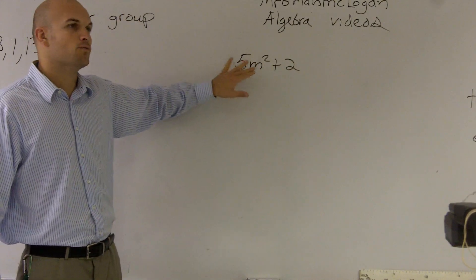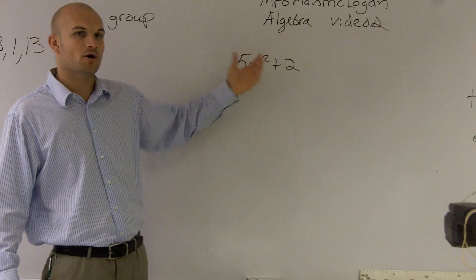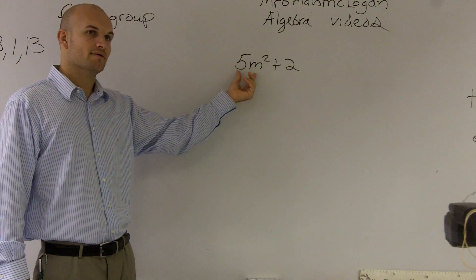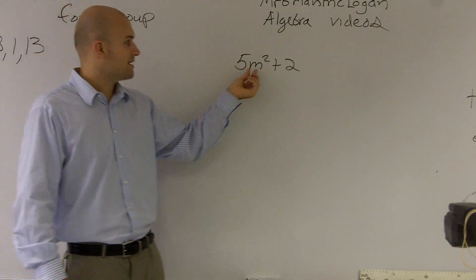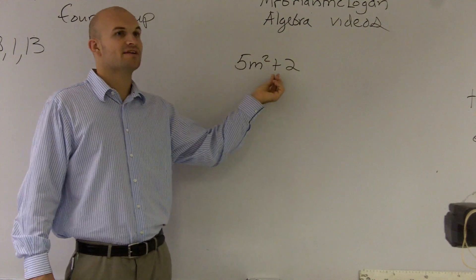Therefore, we know that when we have a number next to a variable with no sign, it represents multiplication. We see multiplication is going on. We also see from our notes that we have a power. Our power is 2, and then we also have an addition.